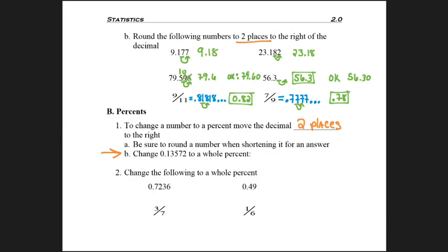For example, in problem 1b, I'm asked to change that decimal number to a whole percentage. First I move the decimal two places over, which gives me 13.572%, but to answer as a whole percent, I end up getting 14%.